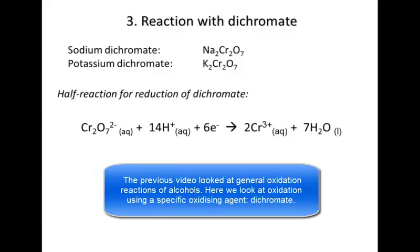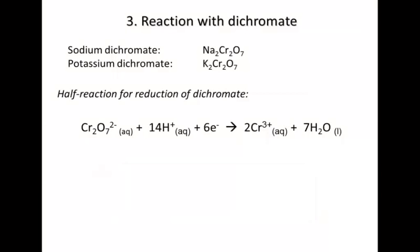Let's look at the specific reaction with dichromate. You may recall sodium dichromate and potassium dichromate from redox chemistry. The dichromate anion is a strong oxidizing agent, and it is this anion that does the oxidizing.